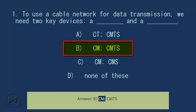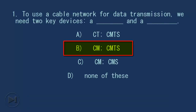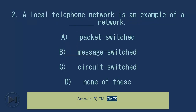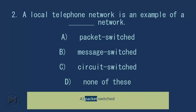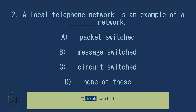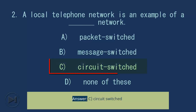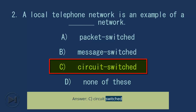Question 2: A local telephone network is an example of a blank network. A. Packet switched. B. Message switched. C. Circuit switched. D. None of these. Answer: C. Circuit switched.